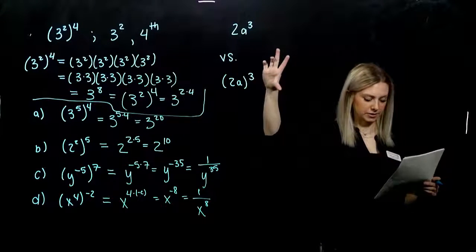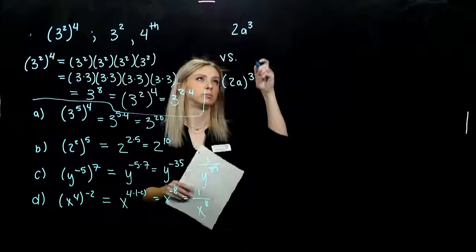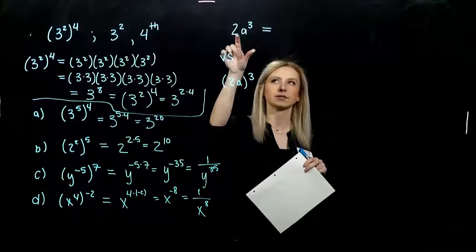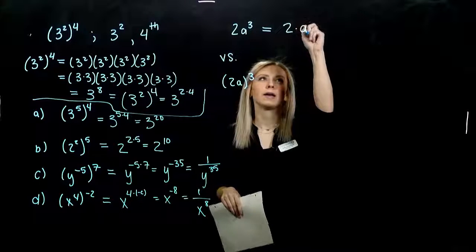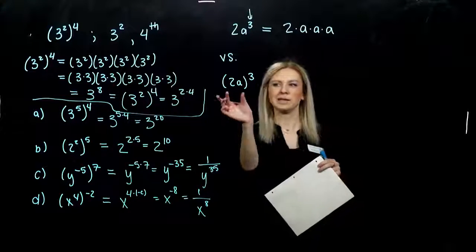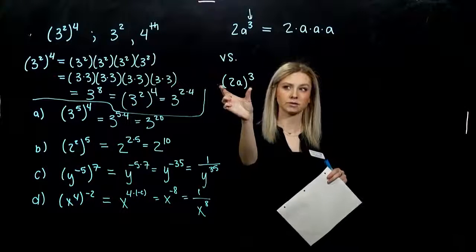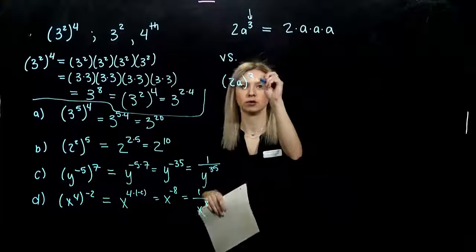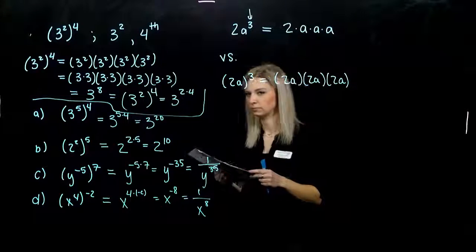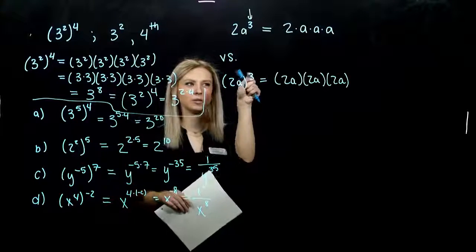Now let's look at these two: what's the difference between 2a cubed and the quantity 2a cubed? For the first one, what is the base for the power three? It's attached only to a. So this tells me I'm taking 2 and multiplying it by a times a times a, three times in total. But for the second one, what is the base? Three is attached to the whole 2a — so it's 2a times 2a times 2a, three times in total. We're going to figure out what it means when I have a power on the outside and a product on the inside.